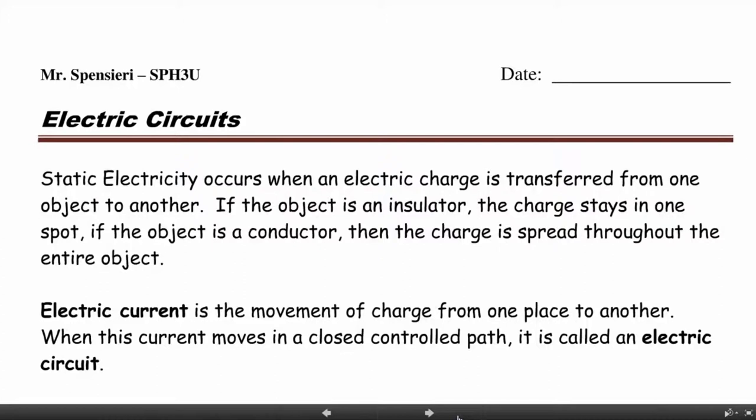When a charge passes through a conductor, the movement of the charge is called an electric current. When an electric current moves through a closed control path, we call that path an electric circuit. We can use electric circuits to transform electric potential energy into different forms of useful energy.